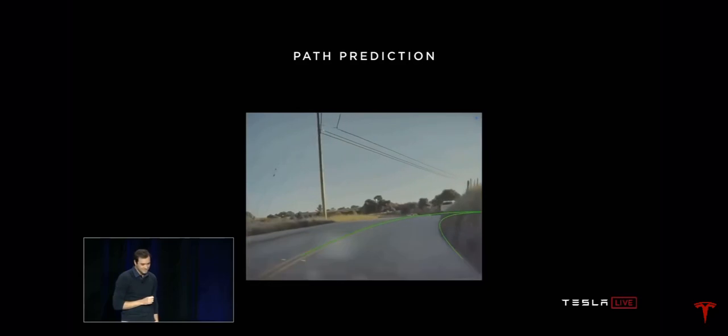The crazy thing is the network is predicting paths it can't even see with incredibly high accuracy. It can't see around the corner, but it's saying the probability of that curve is extremely high. That's the path — and it nails it.